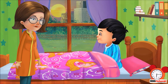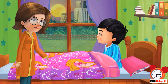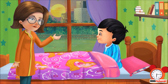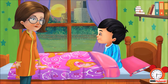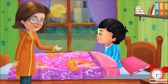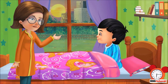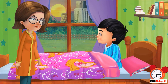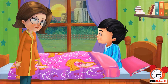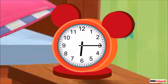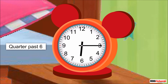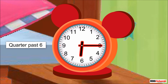Then his mother explains to him, when the minute hand is on 3, the time is read as quarter past, or quarter of an hour. His mother then showed him the clock and said, first let us look at the hour hand. It's beyond 6 and the minute hand is at 3, so we read the time as quarter past 6.